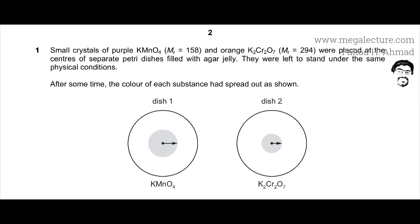So you have these petri dishes with K2Cr2O7 and KMnO4. The colors are also given and after some time the color of each substance had spread out as shown. You can see over here that KMnO4 was placed over here and now it has spread in the petri dish, in that agar jelly that it was placed in, it has spread and covered a larger region. Whereas K2Cr2O7 was placed over here, it has also spread but it has covered a smaller region compared to KMnO4.